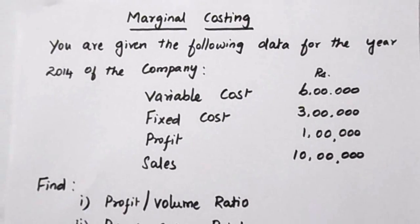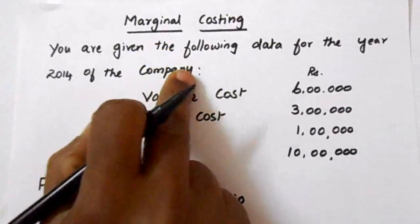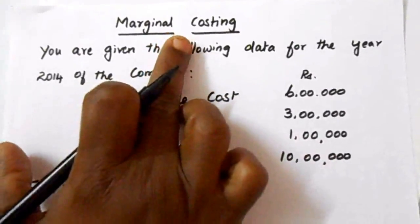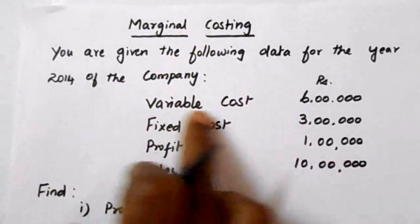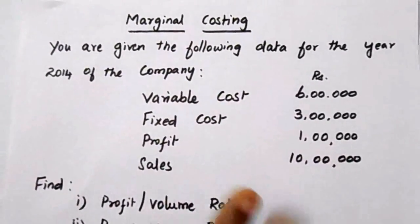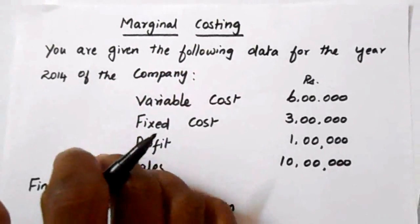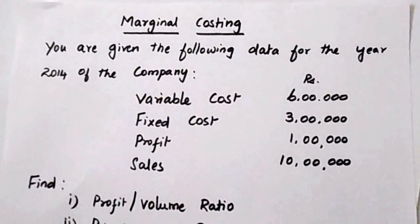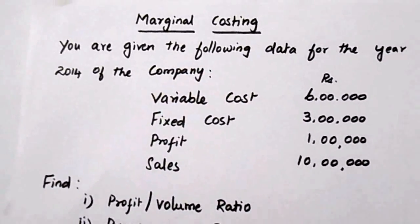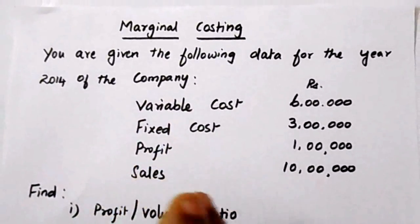In this video I am going to explain marginal costing statement. Before solving a problem, let me explain the basic concept of marginal costing and each term used in the marginal costing statement. Marginal costing can be understood in two different aspects: one is the economic point of view and another is the accountant point of view. According to the economic point of view, the cost incurred in producing an additional unit of product is termed as marginal cost.